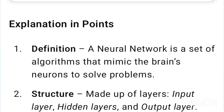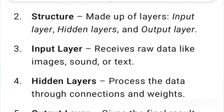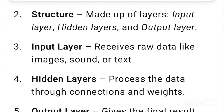Definition: A neural network is a set of algorithms that mimic the brain's neurons to solve problems. Structure: Made up of layers — input layer, hidden layers, and output layer.